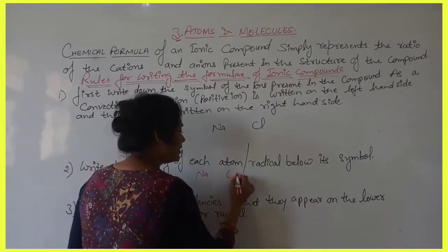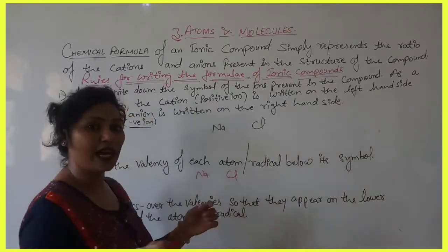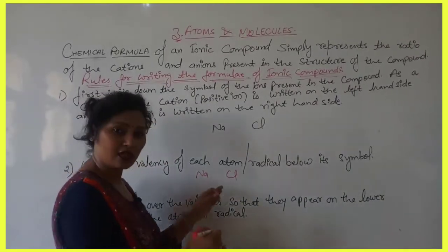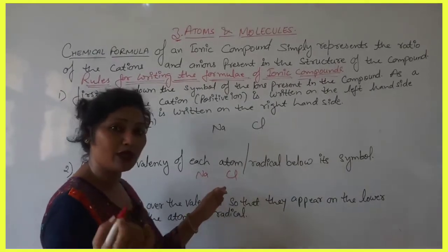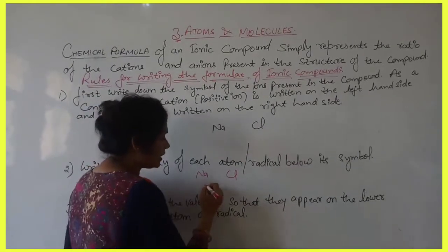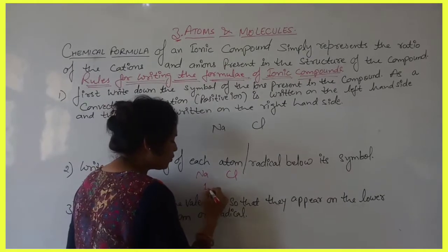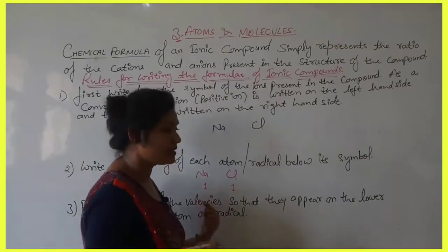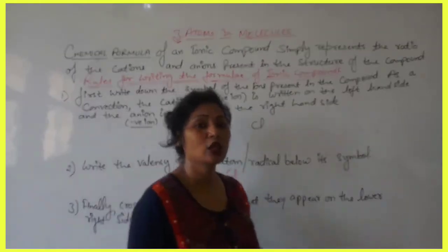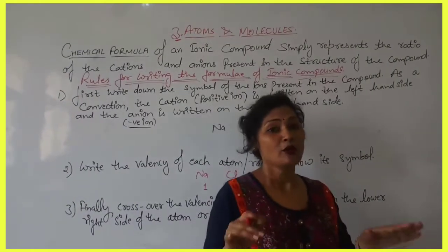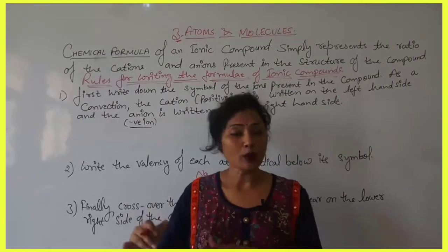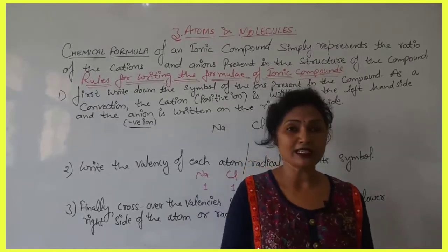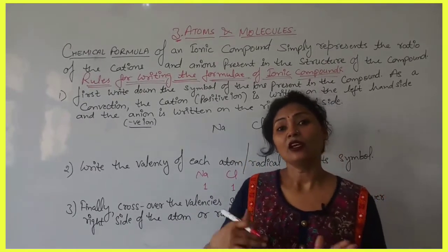For example, for NaCl, after writing the symbols, write the valency below each — valency 1 for Na and valency 1 for Cl. If the valencies are equal, there is no need to write them separately, because you can take the common factor and divide, so the same valencies will be omitted.